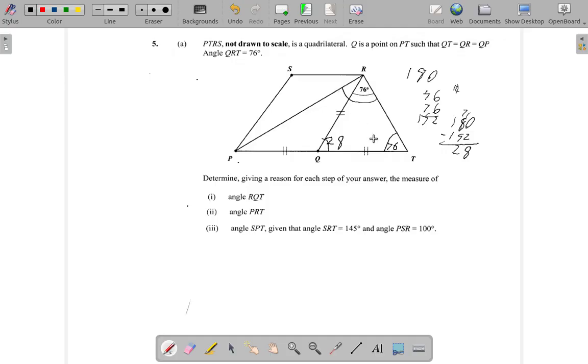If you consider PRT as one whole triangle, one big triangle, you notice you have this angle already 76. Let's see if I can get this angle. I have 28 here. Oh guess what, you see from here all the way to here.